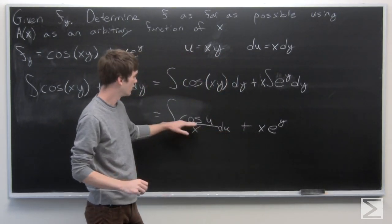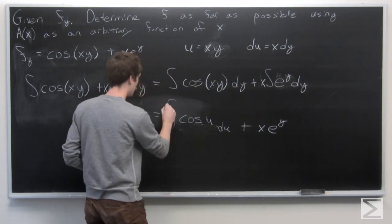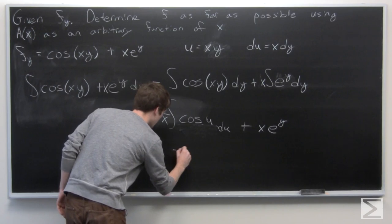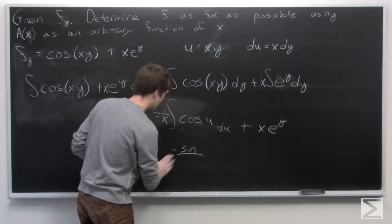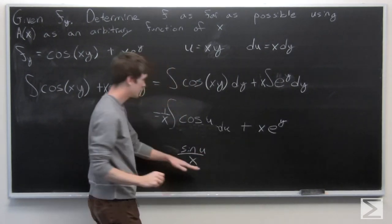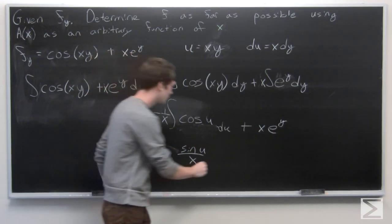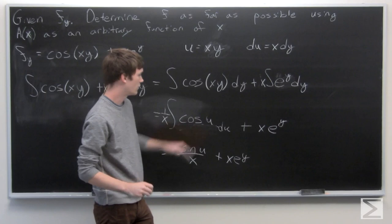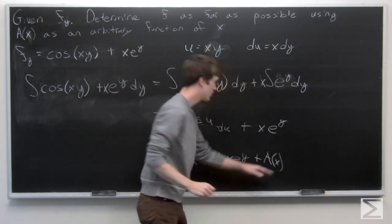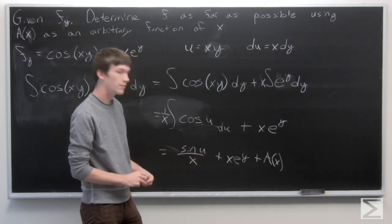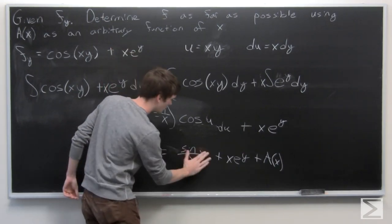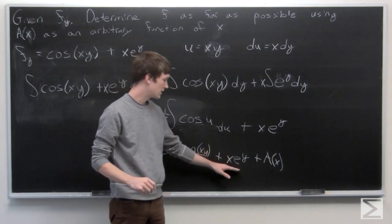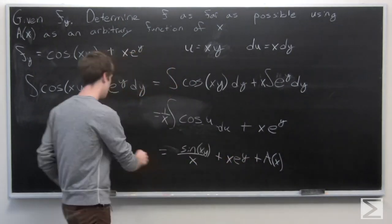We can bring the 1 over x to the outside of our integral, so we have 1 over x times the integral of cosine u. The integral of cosine is positive sine, so we have sine(u) over x plus x·e to the y, and we also include plus a(x).